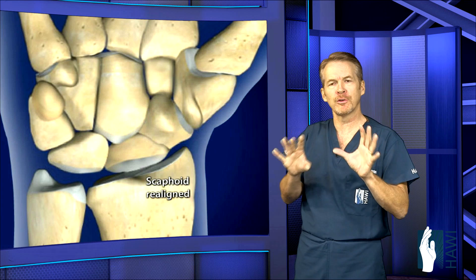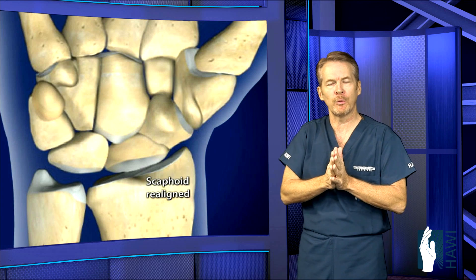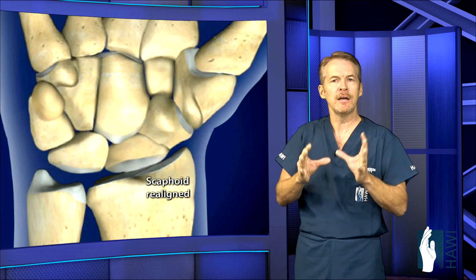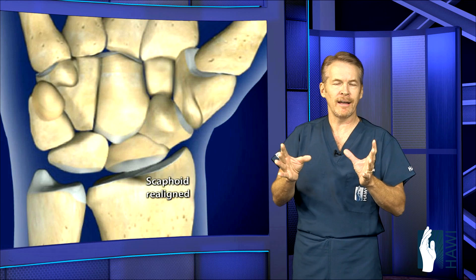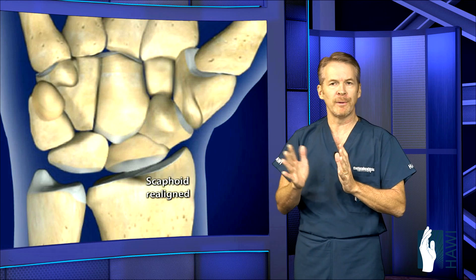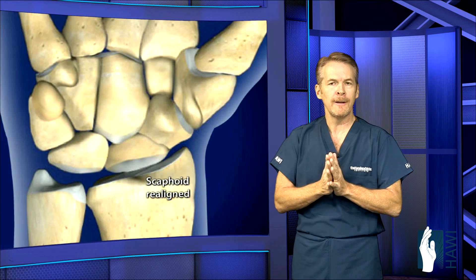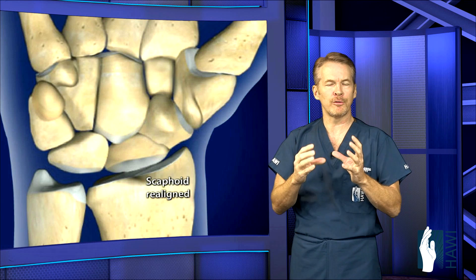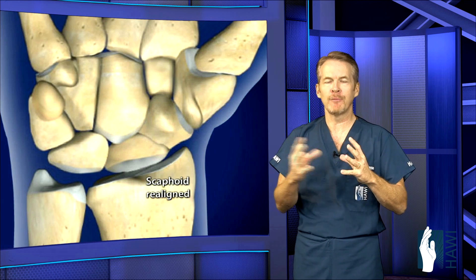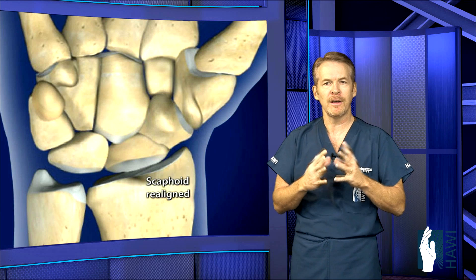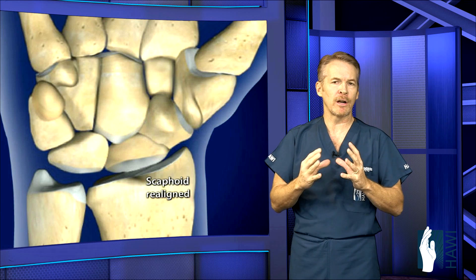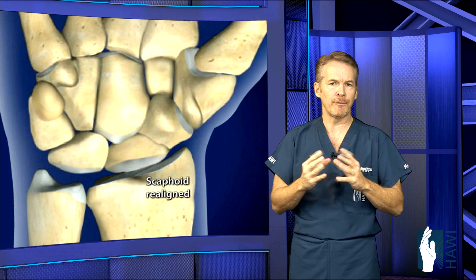Let's take a look at the surgical procedure. When do we do surgery? If it's just a hairline fracture that's not separated, you can go with a cast — it can take at least six weeks, like most fractures, but in this bone it could take several months. If it's displaced, surgery is recommended. Also, in an elite athlete who doesn't want to be in a cast for three to four months, they may elect to put a screw in, which can speed up recovery time to about five to six weeks.